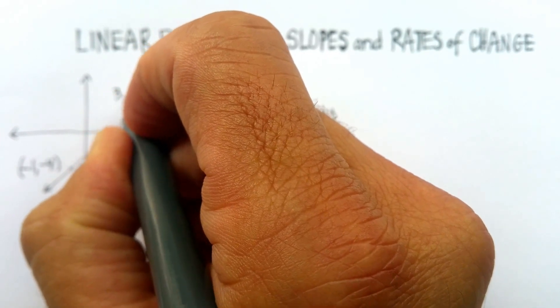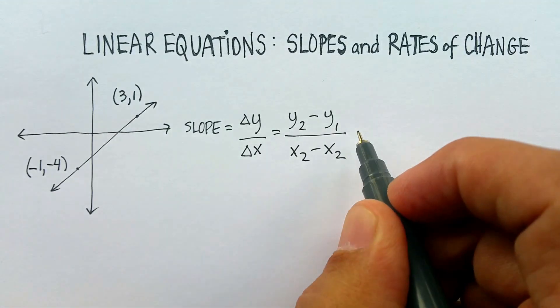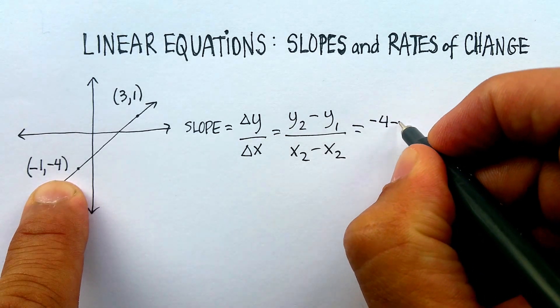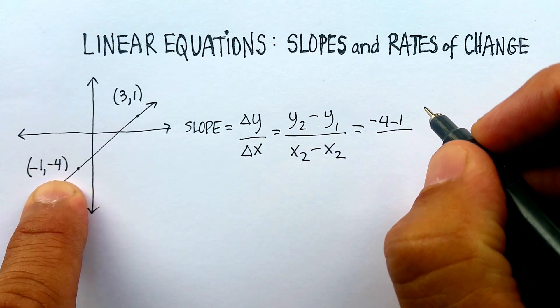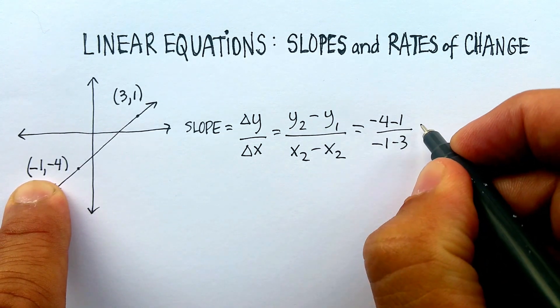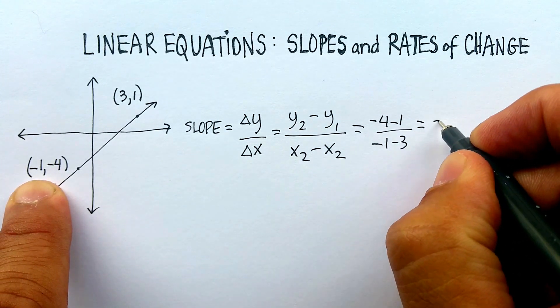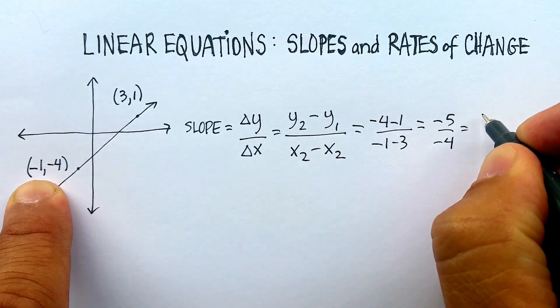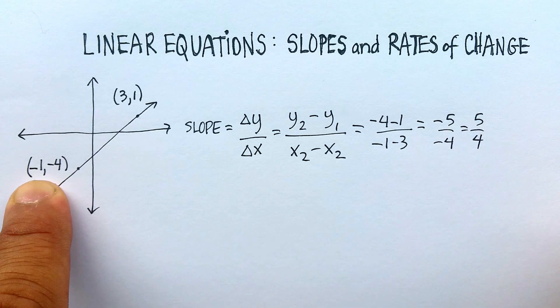Again, I could just subtract the two y's, negative 4 minus 1, subtract the two x's, negative 1 minus 3, and I end up with negative 5 over negative 4, which would be a slope of 5 over 4.